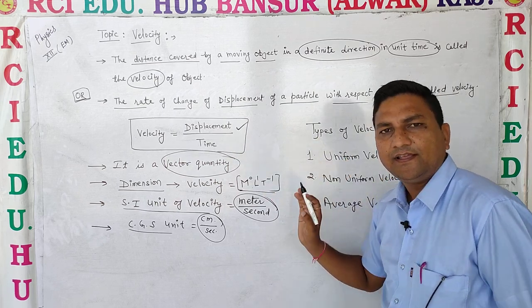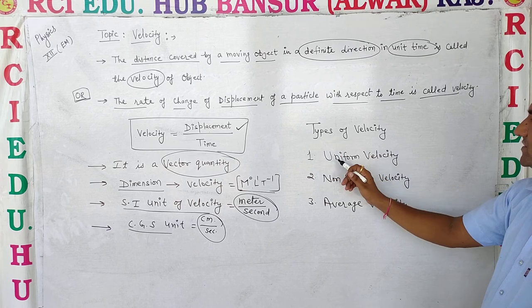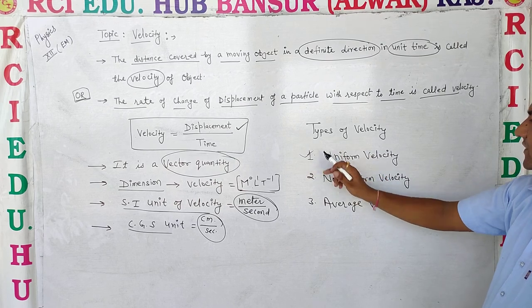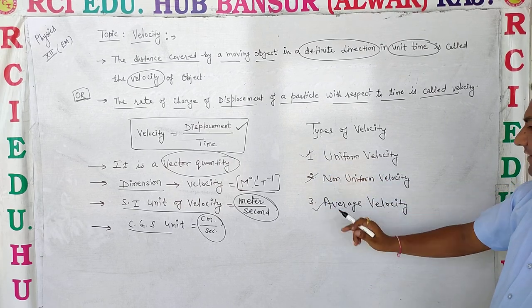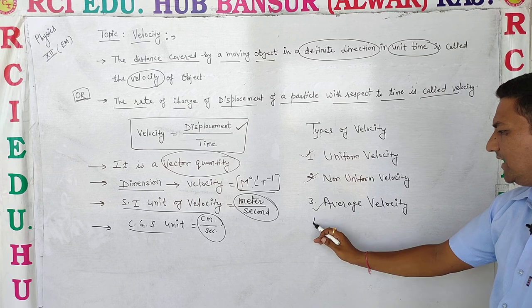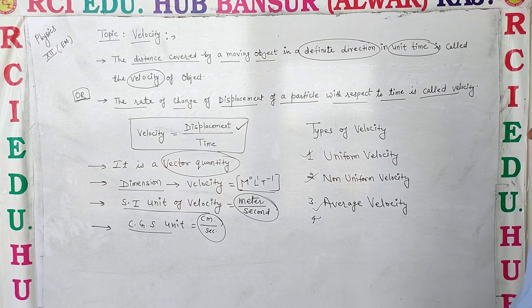Types of velocity: number one, uniform velocity; number two, non-uniform velocity; number three, average velocity; and number four, instantaneous velocity — we will cover these in the next video.